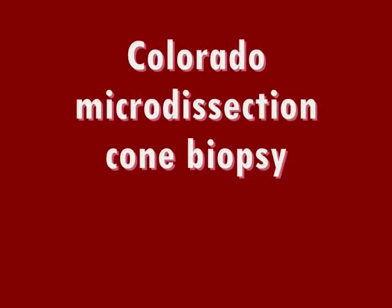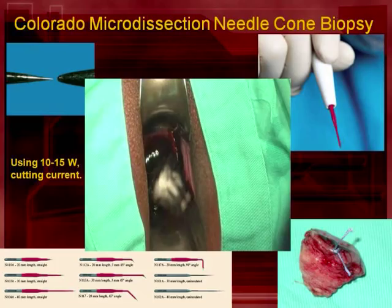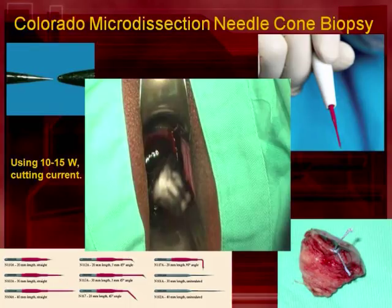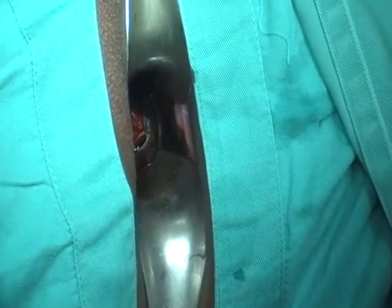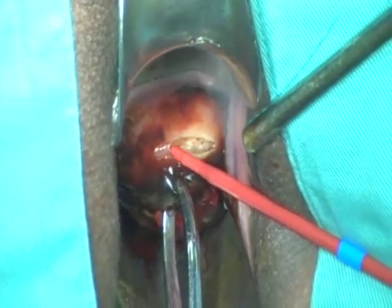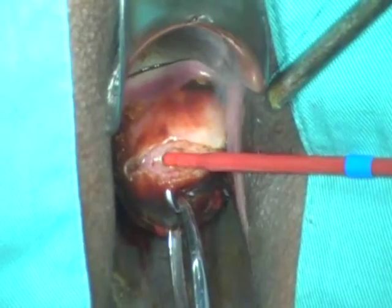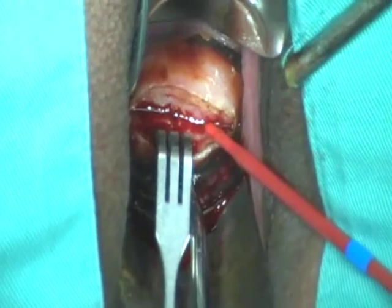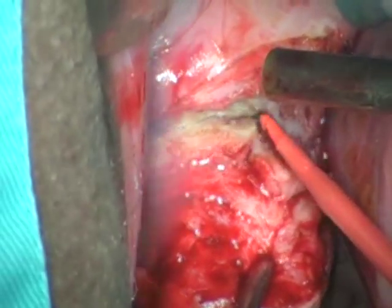The next video clip will show how to perform Colorado Microdissection Cone Biopsy. This procedure uses a Colorado needle with a very fine tip, allowing a very low power setting of 10 to 15 watts instead of 50 watts as in standard LEEP. Due to the low power setting, thermal artifact in Colorado Microdissection Cone Biopsy is very minimal, and in good hands it is comparable with knife cone biopsy. The preparation is similar to LEEP and knife cone biopsy, and it can be performed in a day care setting. In this patient, Colorado Microdissection Cone Biopsy was performed under regional anesthesia for adenocarcinoma in situ of the cervix.